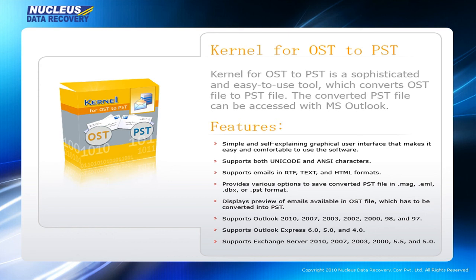Kernel for OST to PST provides various options to save the converted PST file in MSG, EML, DBX, or PST format. It displays a preview of emails available in the OST file which has to be converted into PST. It supports Outlook 2010, 2007, 2003, 2002, 2000, 98, and 97.